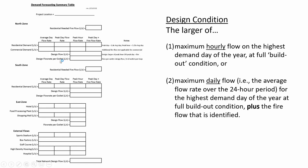The design flow rate per outlet is the design flow divided by two, because there are two interior locations where water is being delivered inside the north zone. Same thing with the south zone — there are two arrows pointing into the south zone on the map. The residential demand, the bigger of peak hour or peak day plus fire, is the design flow, and the design flow per outlet is that divided by two.